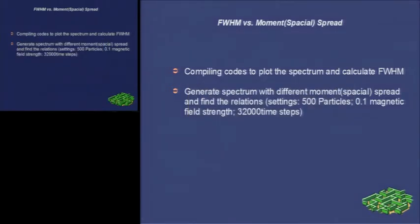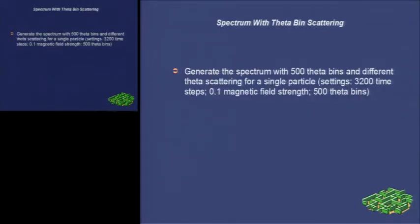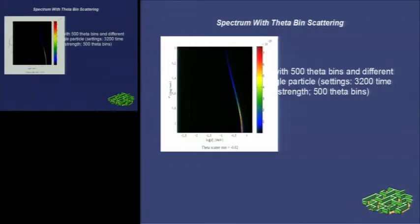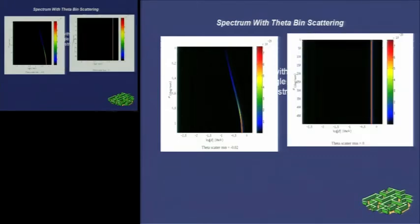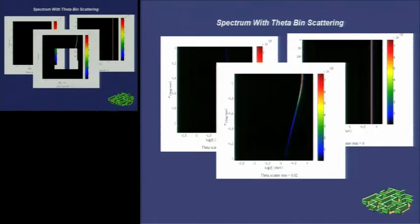Next is spectrum generation with theta beam scattering. Because of the efficiency of the codes, one particle test is done to determine whether the code functions well. This is the spectrum at theta equal to zero. This is the spectrum with theta spread from minus 0.02 to zero. And this one is theta equal to zero. And this one is theta from zero to 0.02. All the results are just as expected.